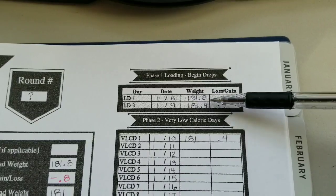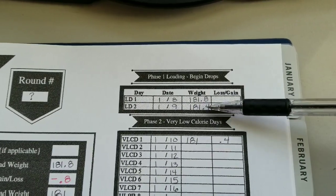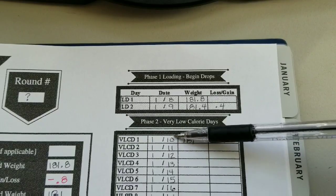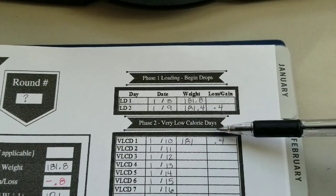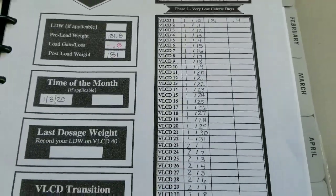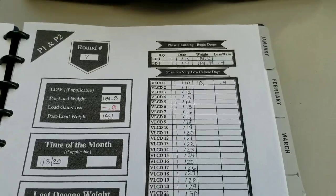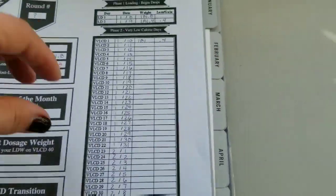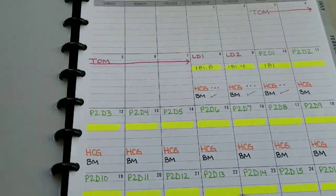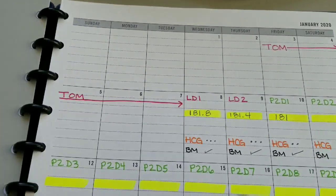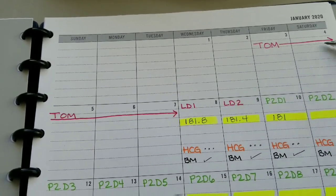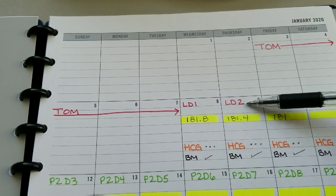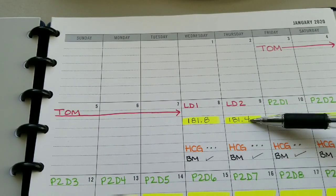The more you write it, the more it sinks in. So that was my weight on my first loading day; my second loading day I had a loss, and then on VLCD day one in phase two, I also had a loss. I'll calculate those days — this is just quick reference for the bare facts. For more detail, there's the monthly calendar. What I do here is document by the day: TOM, finished TOM, loading day one, loading day two. These are my weights — first thing you do when you wake up, go to the bathroom, strip your clothes down, step on the scale.